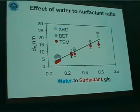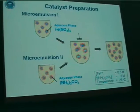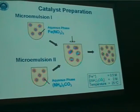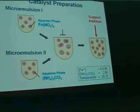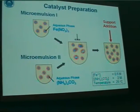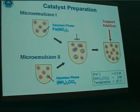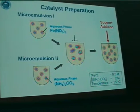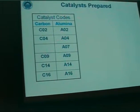But we still don't have a supported catalyst. We follow the exact same preparation procedure up to the point where we add the support material to the precipitate, which is still located in the micelles. We do this for 30 minutes, then wash with acetone, break up the micelles, remove the surfactant, and the material is then calcined.